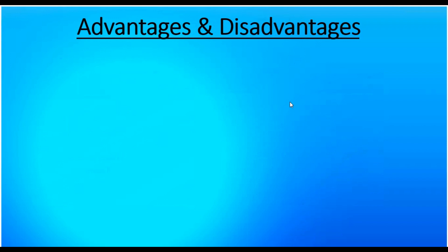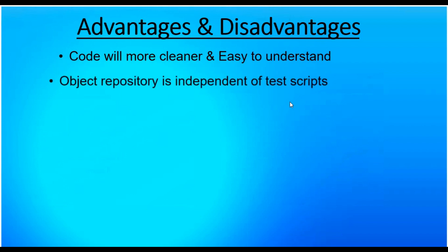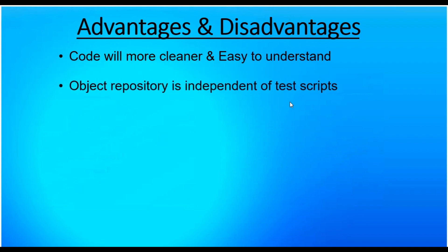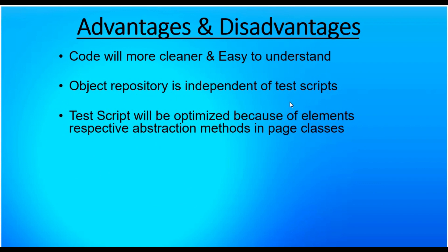Let's discuss the advantages and disadvantages of using the Page Object Model concept. First, code will be cleaner and easier to understand if you follow this concept. Second, the object repository is independent of the test scripts because the page classes contain the web page elements and abstraction methods. Third, test scripts will be optimized because we have page abstraction methods in the page classes, so we can create test scripts with fewer keystrokes.